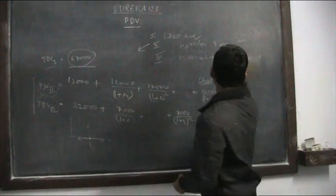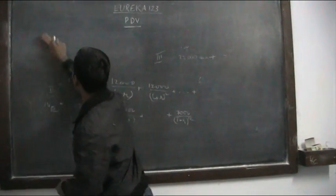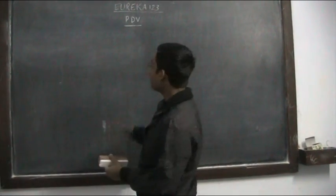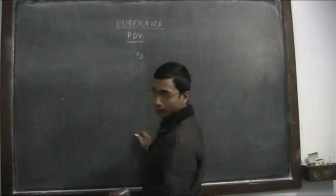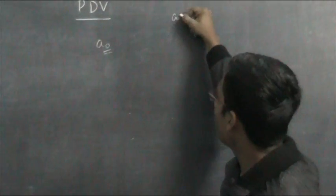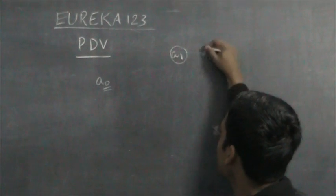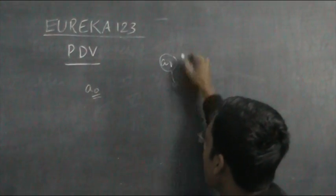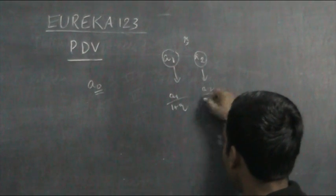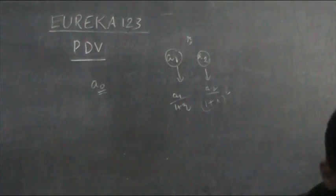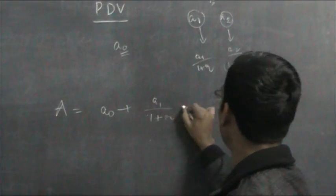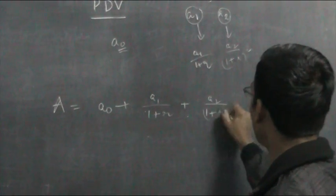There is something called investment projects. When you are investing, initially the fixed costs are very high — say the fixed cost is A0. Then you expect profits every year: profit A1 after the first year, profit A2 after the second year, and so on. The present discounted value is: A = −A0 + A1/(1+R) + A2/(1+R)^2 + ... where A0 is negative because it is a cost.